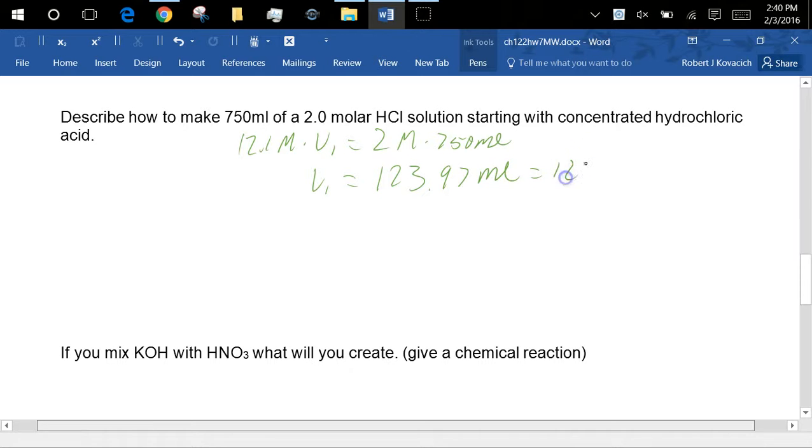And so then this is 123.97 milliliters, so 124 milliliters. So, add 124 milliliters of concentrated HCl to a 750 milliliter. Oh no, that's not right. No bad. This is acid. How is it different than what we've done before?